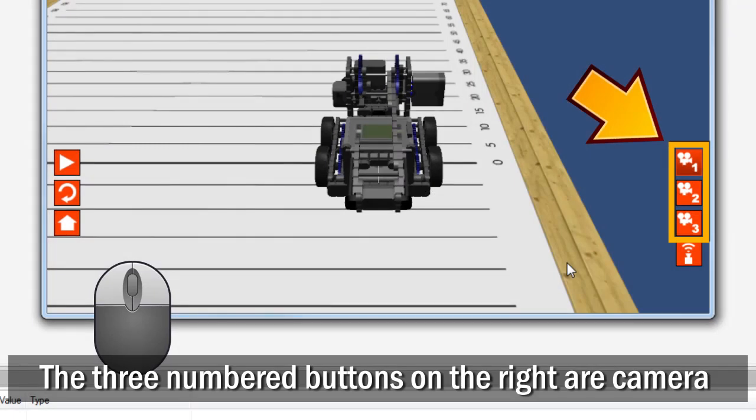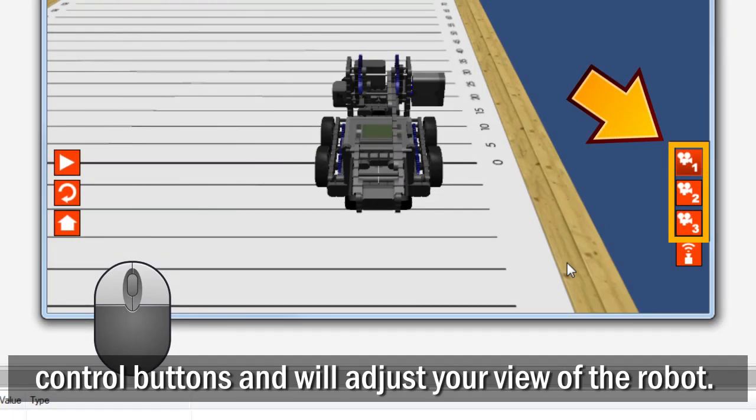The three numbered buttons on the right are camera control buttons and will adjust your view of the robot.